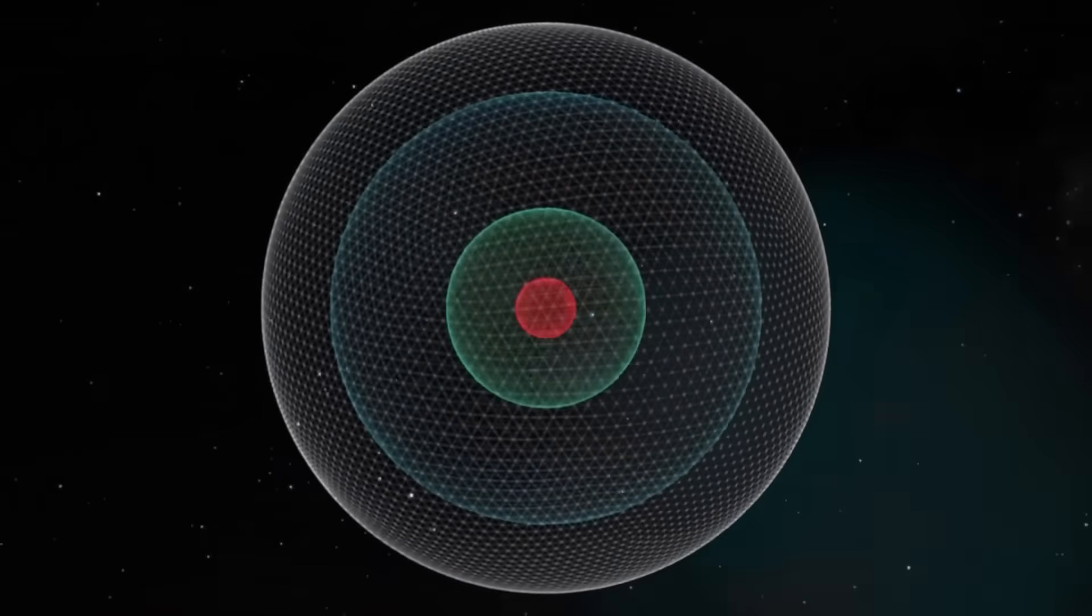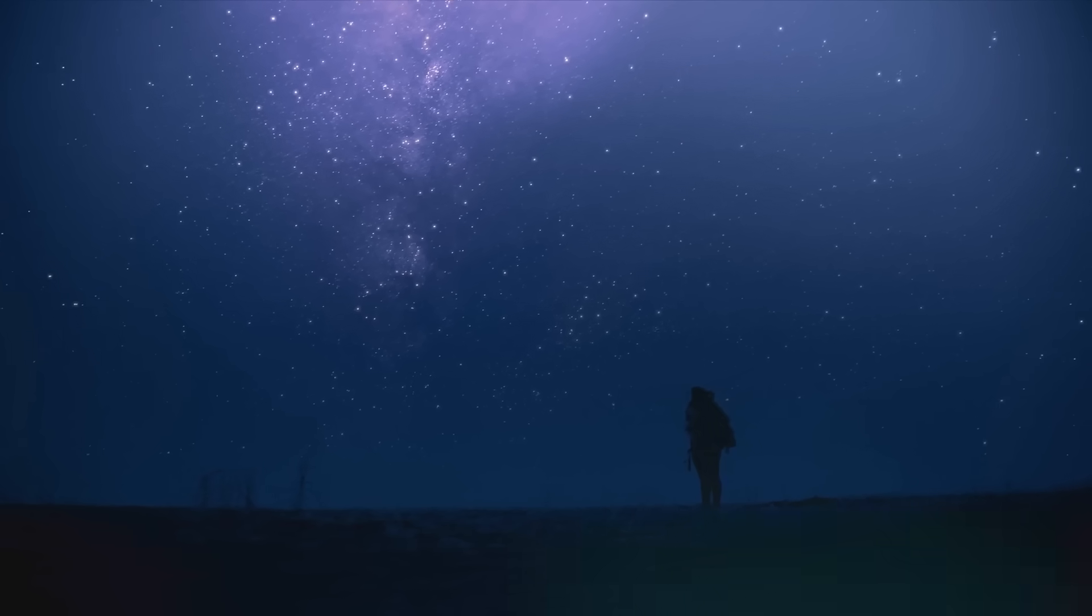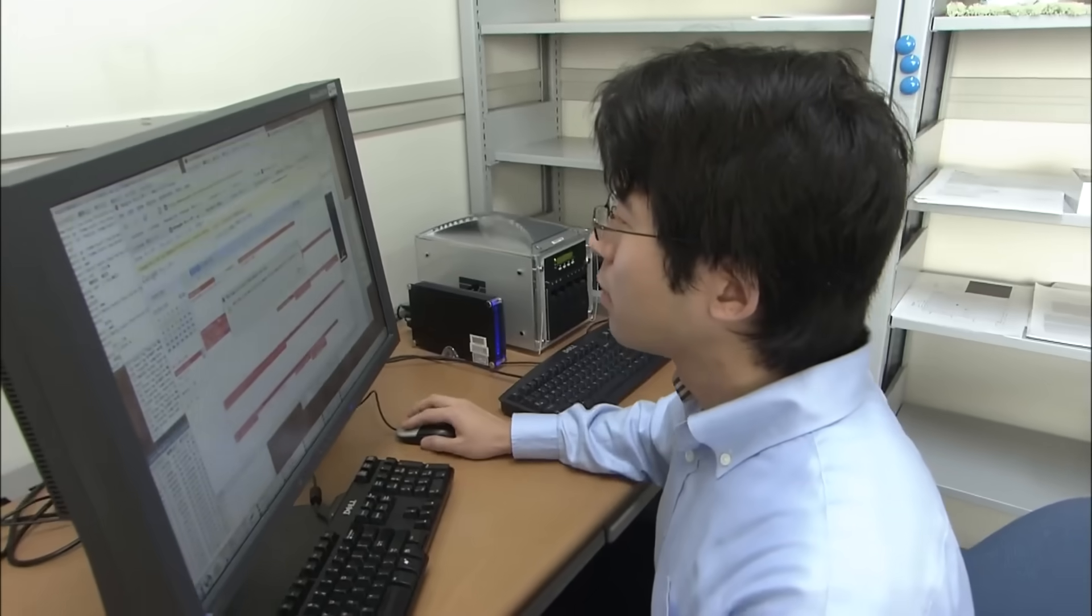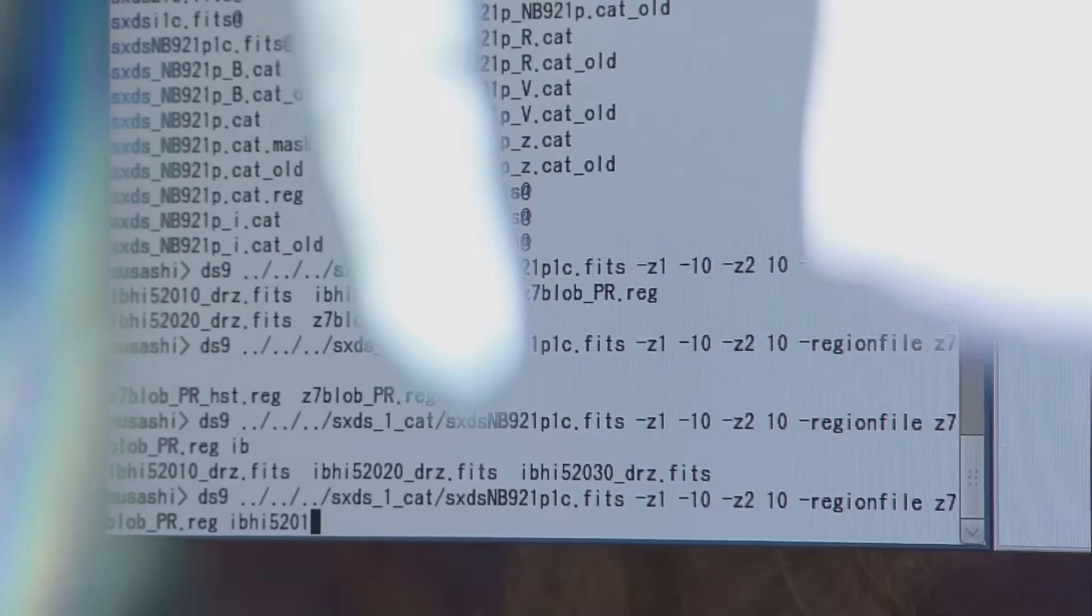And then came the timing. Pulses from distant pulsars, arranged in a 3D web, with Voyager at the center. The map they created pointed toward the same point Voyager was drifting to. An invisible node in interstellar space. A blank region. Or maybe a doorway.